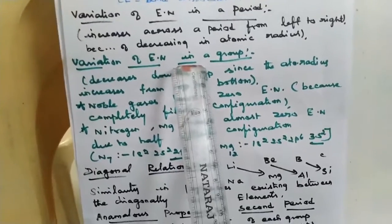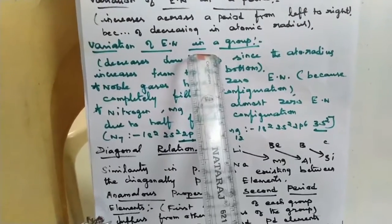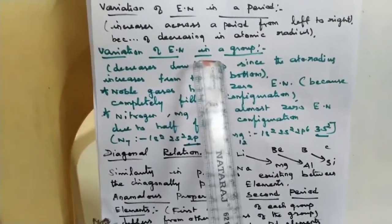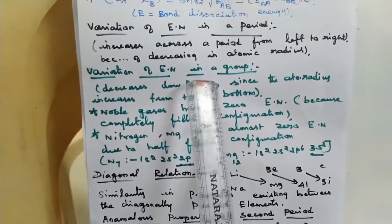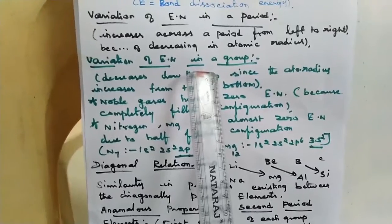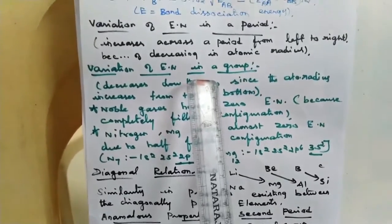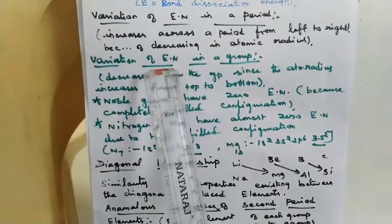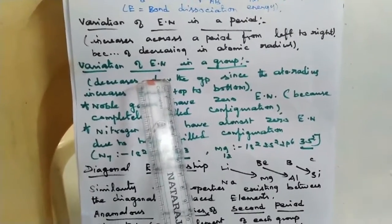On moving down the group, for example in Group 1, electronegativity decreases going from lithium downward. This is because atomic size increases, and the nucleus has weaker attractive forces on the valence electrons. Therefore, as we move down the group, electronegativity decreases.